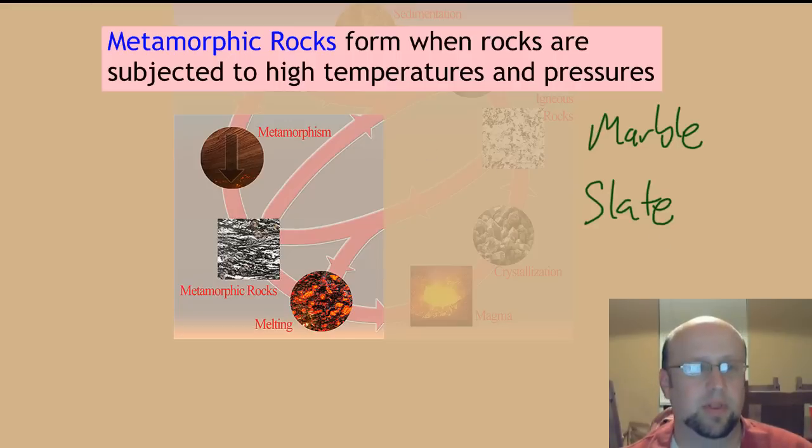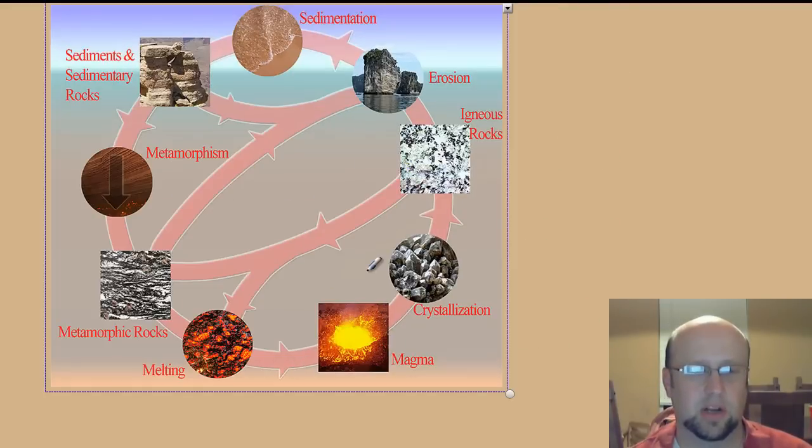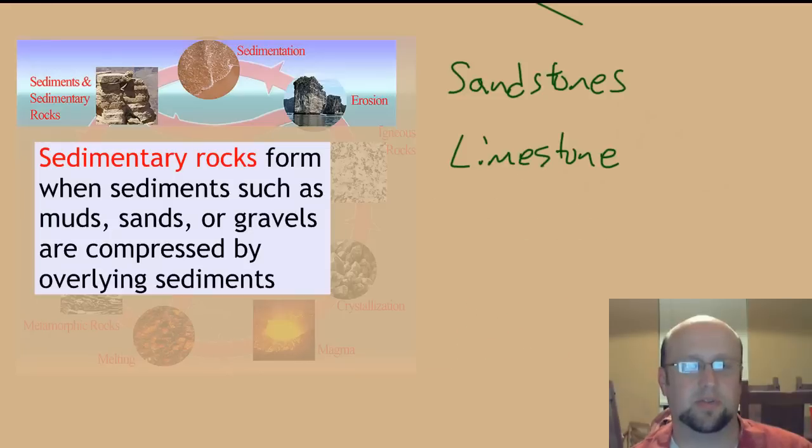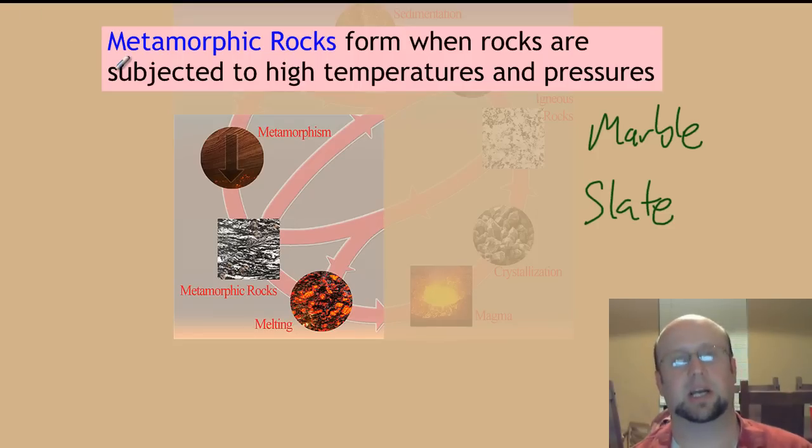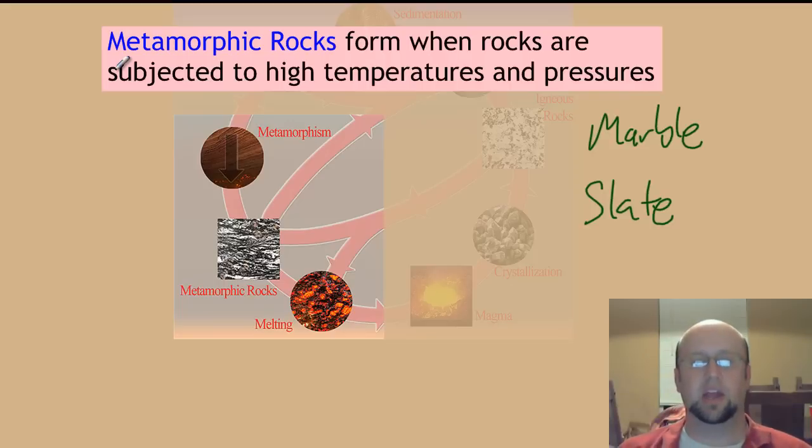If you remember, this is going to go back in a cycle. Those metamorphic rocks, eventually, if the heat and pressure become so great, they're going to turn back into magma. Where do we get the heat and pressure for metamorphic rocks? Typically that's going to come at plate boundaries or in areas of intense volcanic activity, because that's where you're going to get the heat and pressure, like in a subduction zone, that's going to be able to turn that rock into metamorphic rocks.